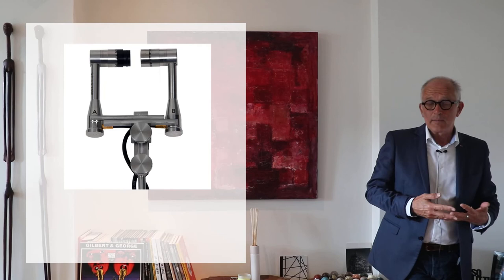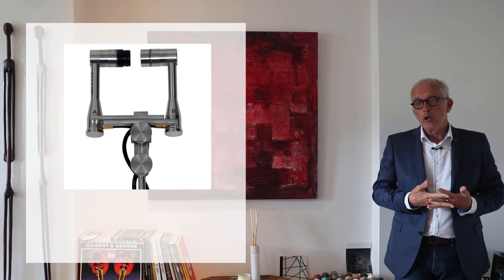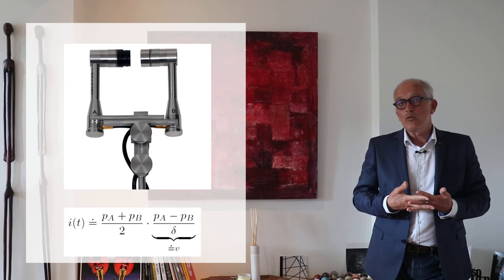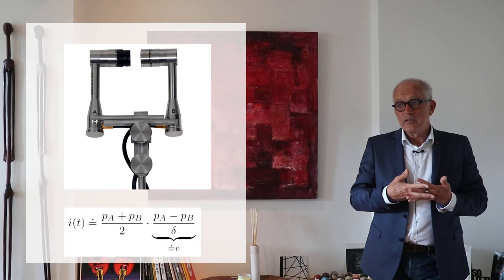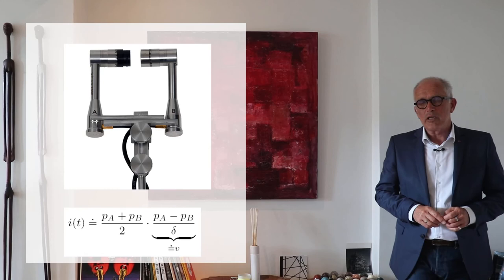What about the velocity? The velocity can be measured because we know that the velocity is proportional to the pressure gradient. And so this device, the two microphones, is going to give us something proportional to the velocity just by taking the difference between the two microphones divided by the distance between the two microphones.